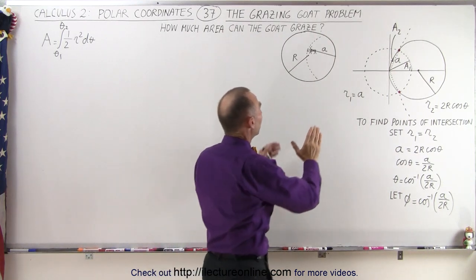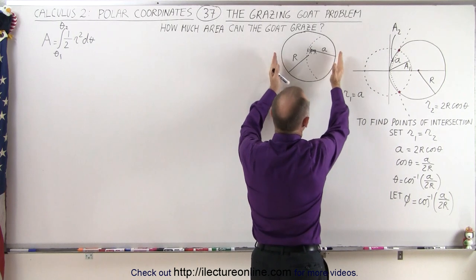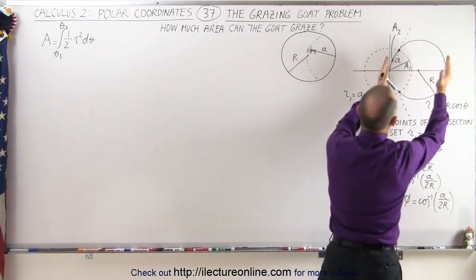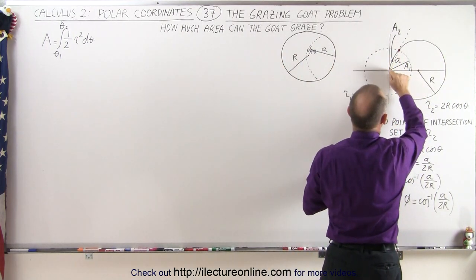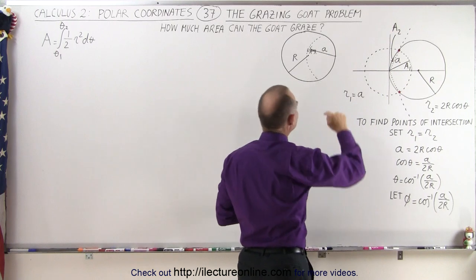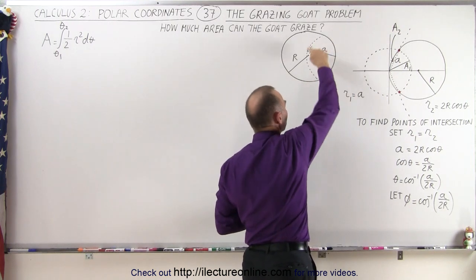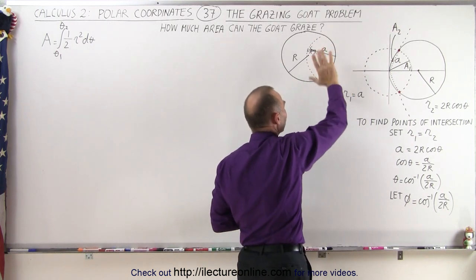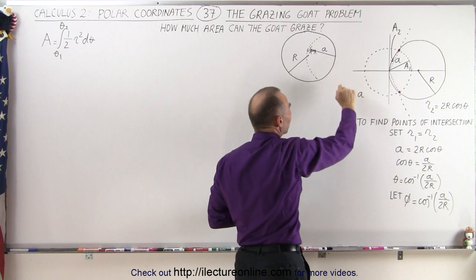What we can do is take the enclosure and place it so the edge of the enclosure is right at the origin, and then allow a circle to be represented by the area that the goat can graze.